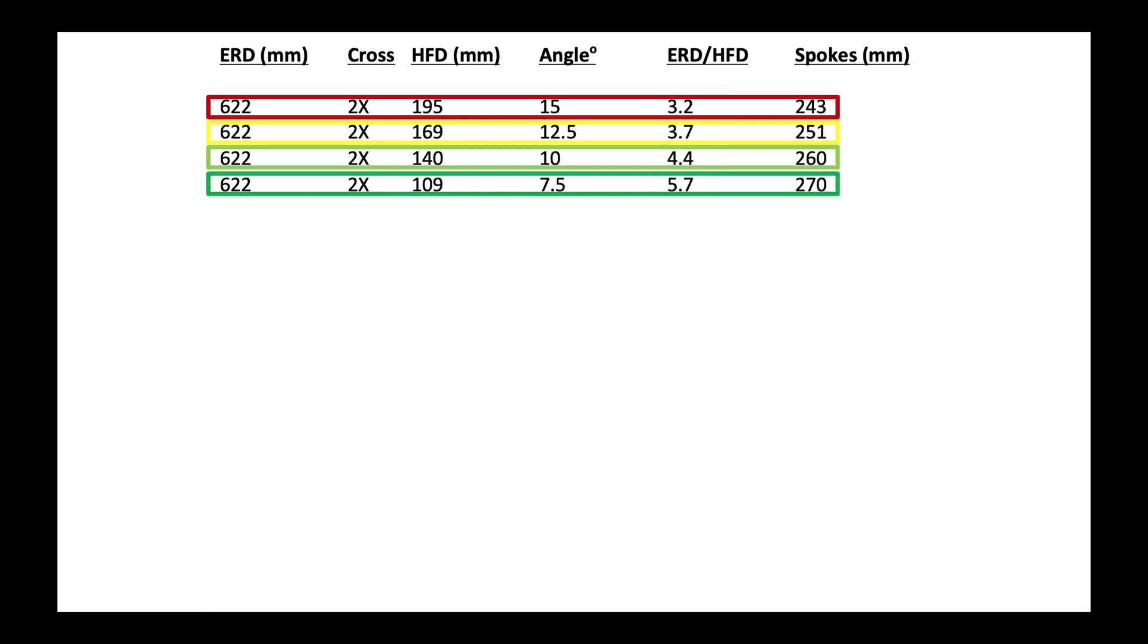And we can fill in the rest of the column. I wouldn't pay a whole lot of attention to the length of the spokes because that's not a hard calculation to make anyway. But look at the fifth column, the ratio of the ERD to the hole flange diameter. It only becomes acceptable if the ratio is 4.4 or higher.